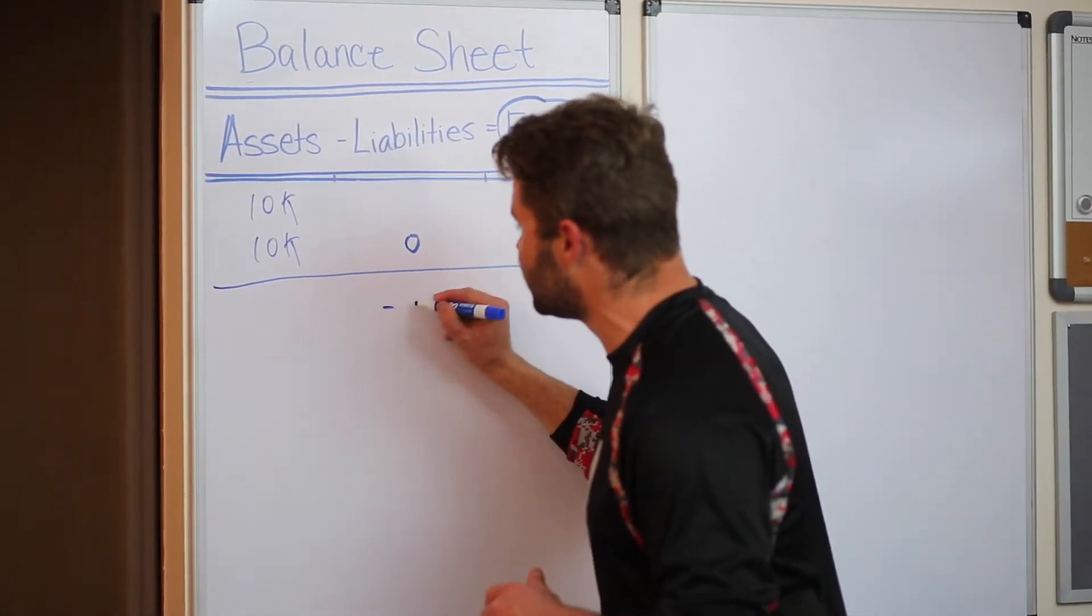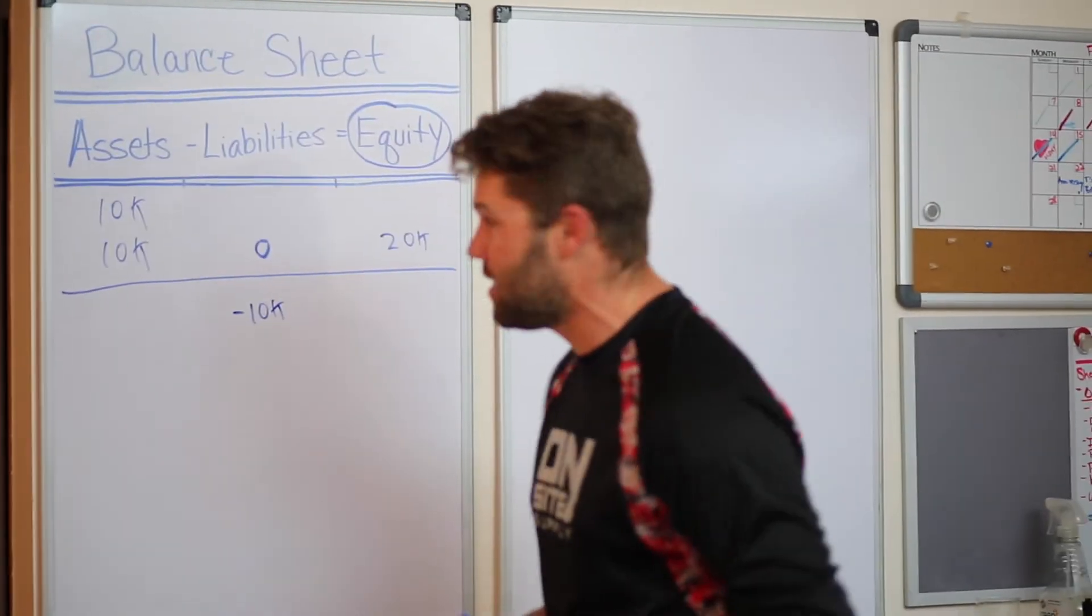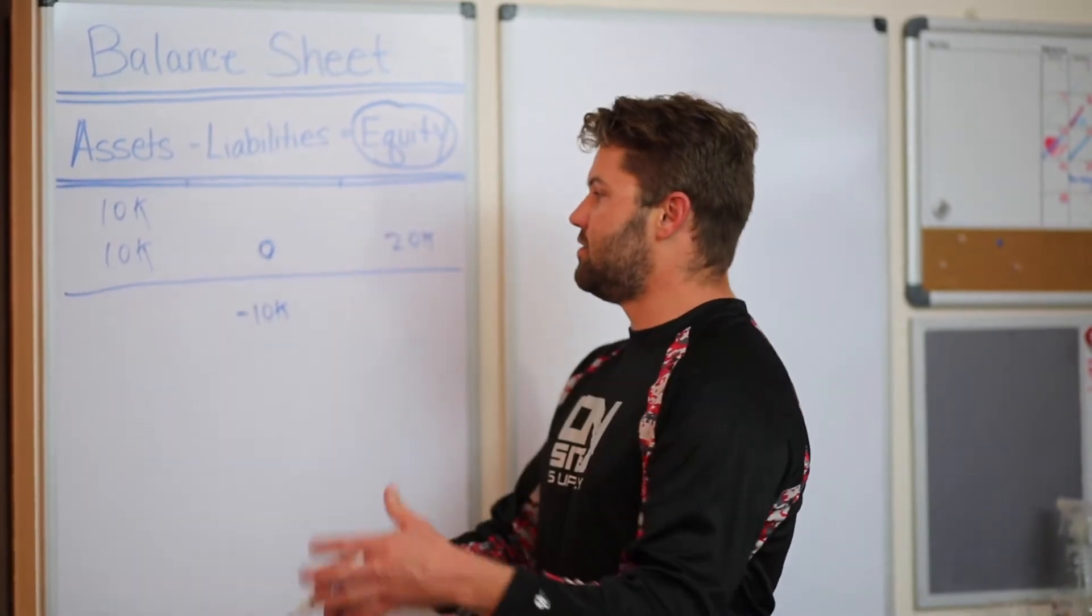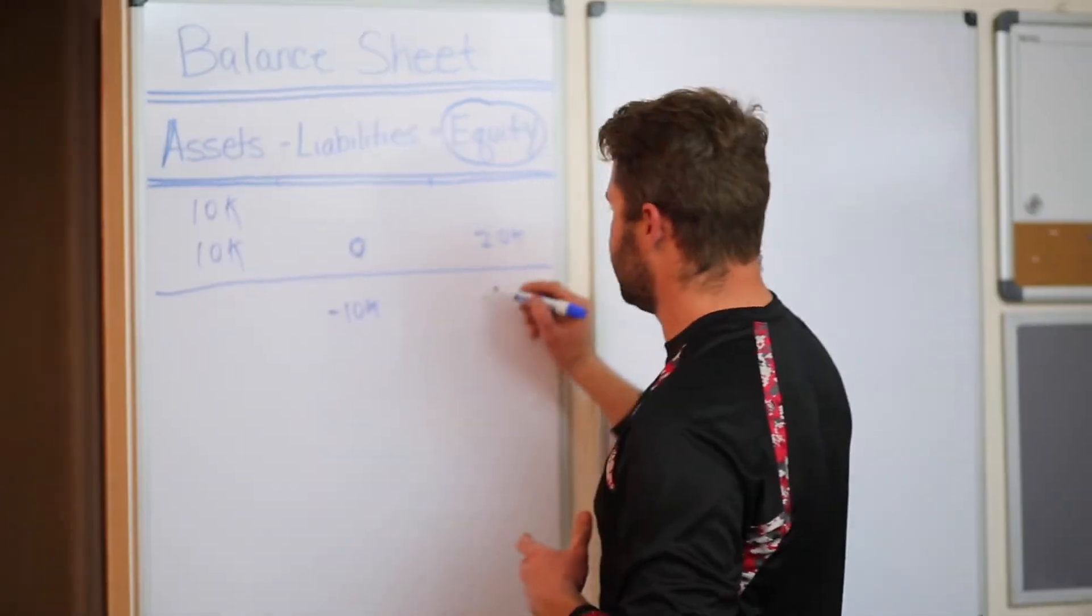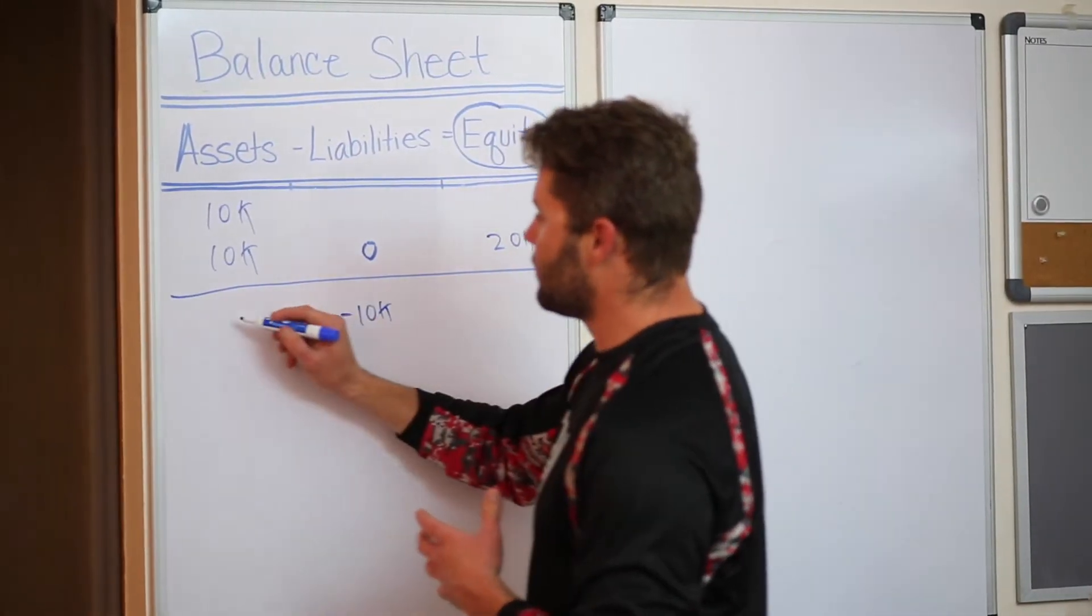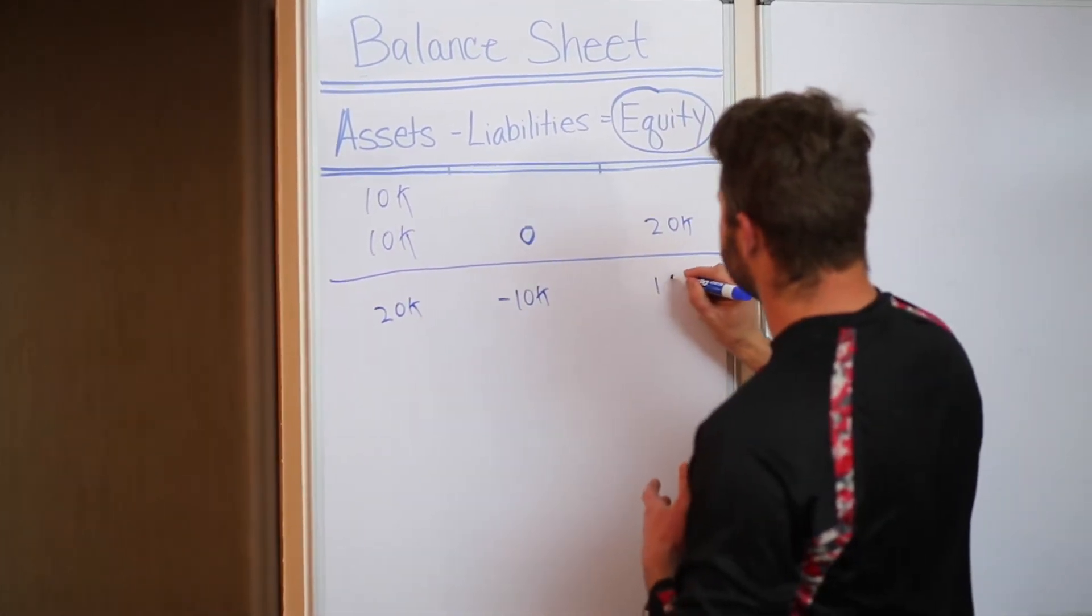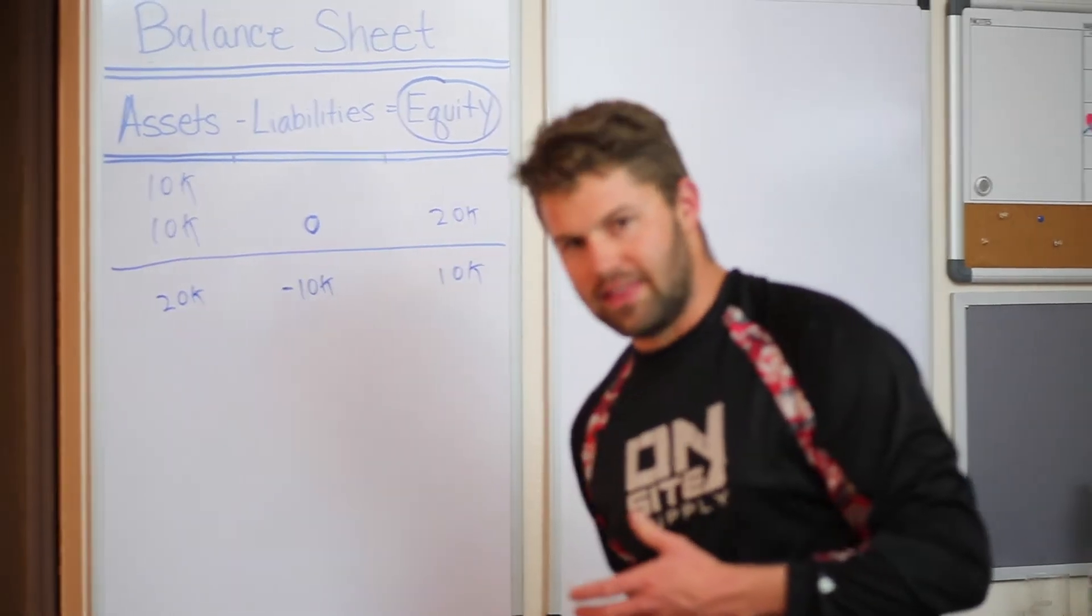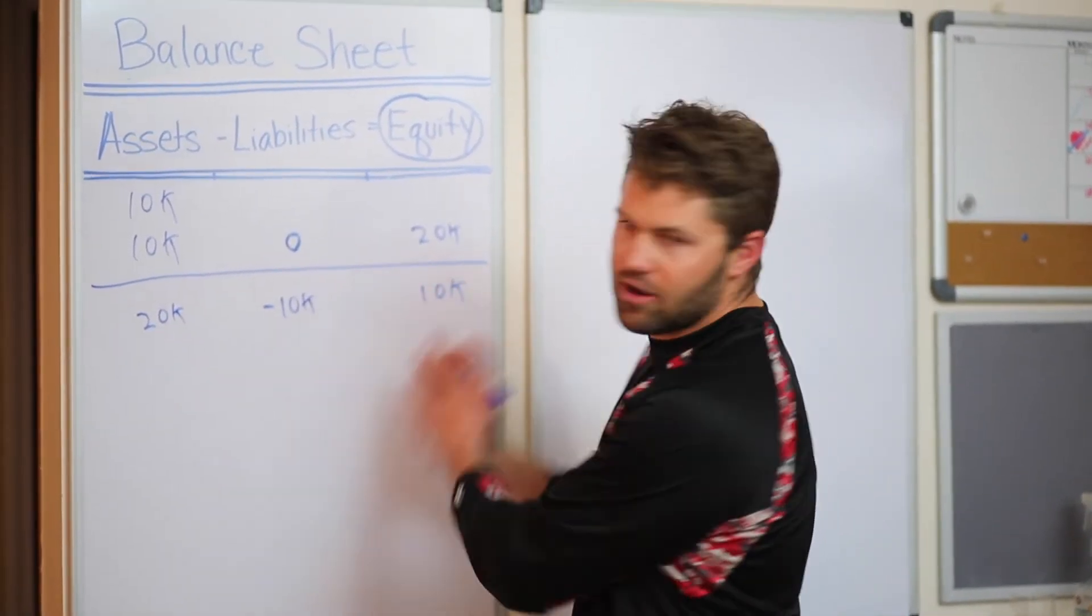We're gonna borrow 10k. So personally to us we owe someone $10,000. We took that from them and we gave it to this individual. Now this individual then gave us a $20,000 asset. So over here we've got $20,000 in assets and we've got $10,000 in equity. Essentially we have just taken $10,000 in equity and put it into our personal equity column here.